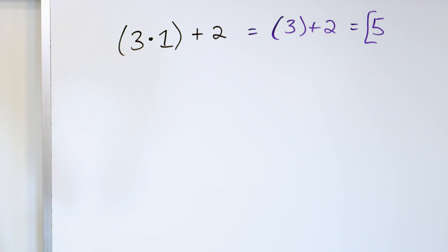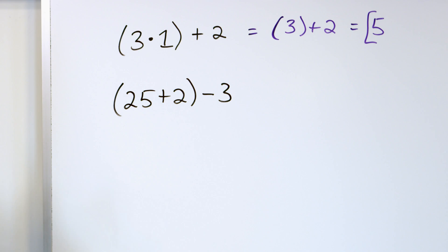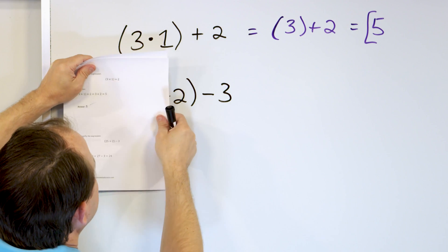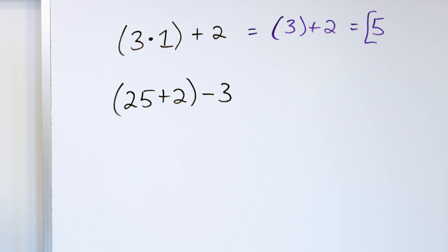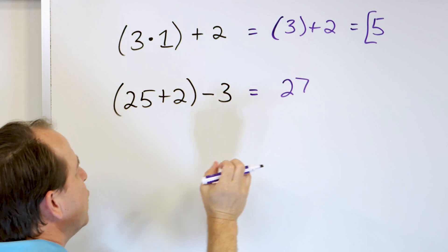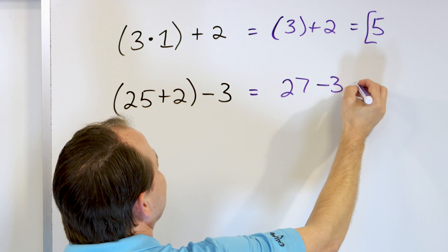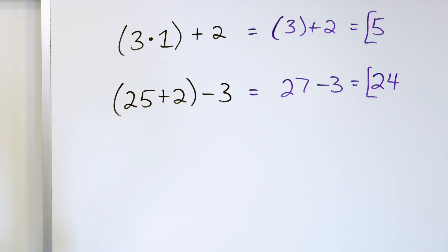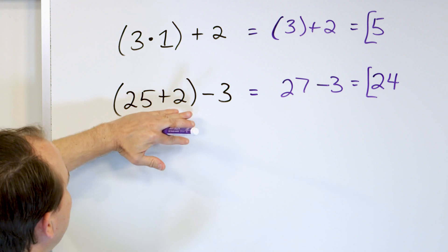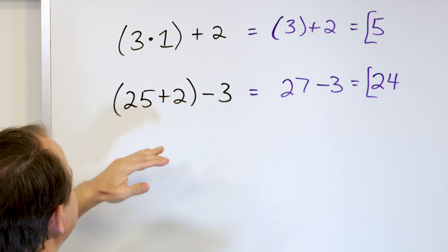Next problem: parentheses 25 plus two, then minus three. It forces us to do what is inside the parentheses first. If you do two minus three first, that is totally wrong. What is 25 plus two? That's 27. Now we subtract three: 27 minus three is 24, and that is the final answer. If you don't do what's inside first, it is completely wrong — that's why we have parentheses.